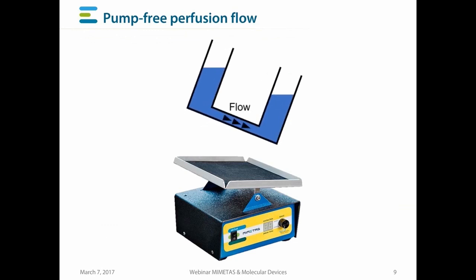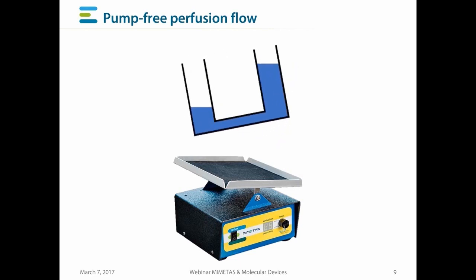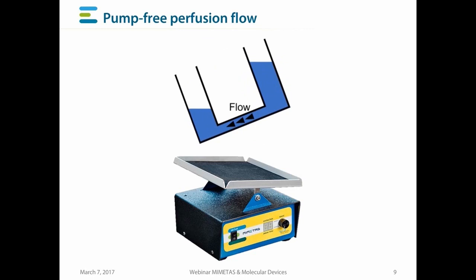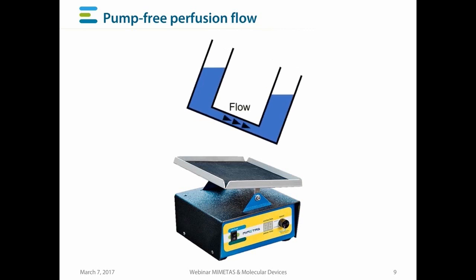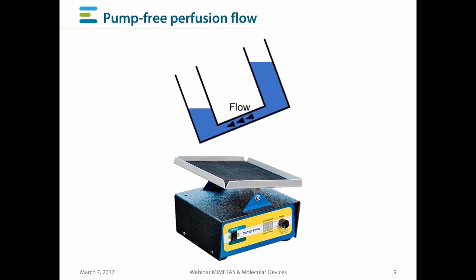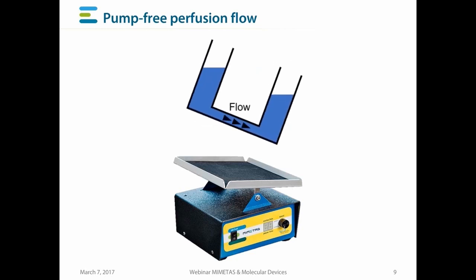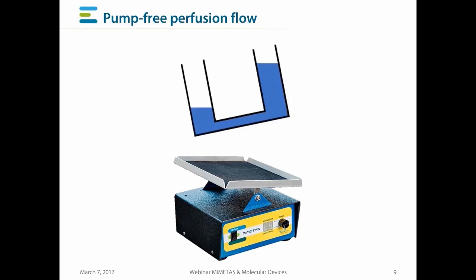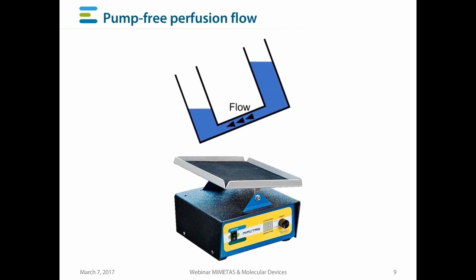To achieve pump and tube-free perfusion, we use a rocker platform called the perfusion rocker. The fluid flow through the tissues growing in OrganoPlates is driven by gravity leveling. To make it go continuously, the plates are simply placed on the perfusion rocker inside an incubator. The perfusion rocker features timed programs designed for the OrganoPlate. For evaluation purposes, you can use a standard continuous rocker platform, and for full control over the perfusion in OrganoPlates, you can use the dedicated perfusion rocker.